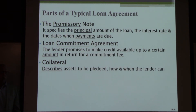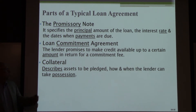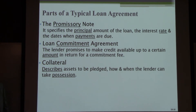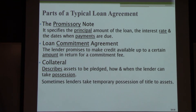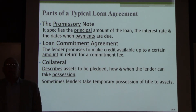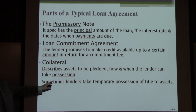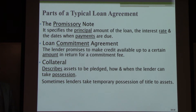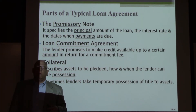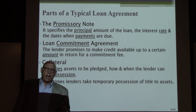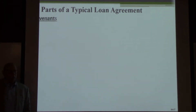There is a section on collateral where the assets are described and the process is laid out as to how and when the lender could take possession — what triggers a default and how will the lender go through the process of taking the assets. Sometimes lenders will take temporary possession of a title; that's called having a lien. A lender can put a lien on the title to assets, which keeps the borrower from selling the asset. As long as there is a loan balance outstanding, the lender could have a lien — so if you own your home but borrowed money in the form of a mortgage, your lender has a lien on your property until you retire that loan.